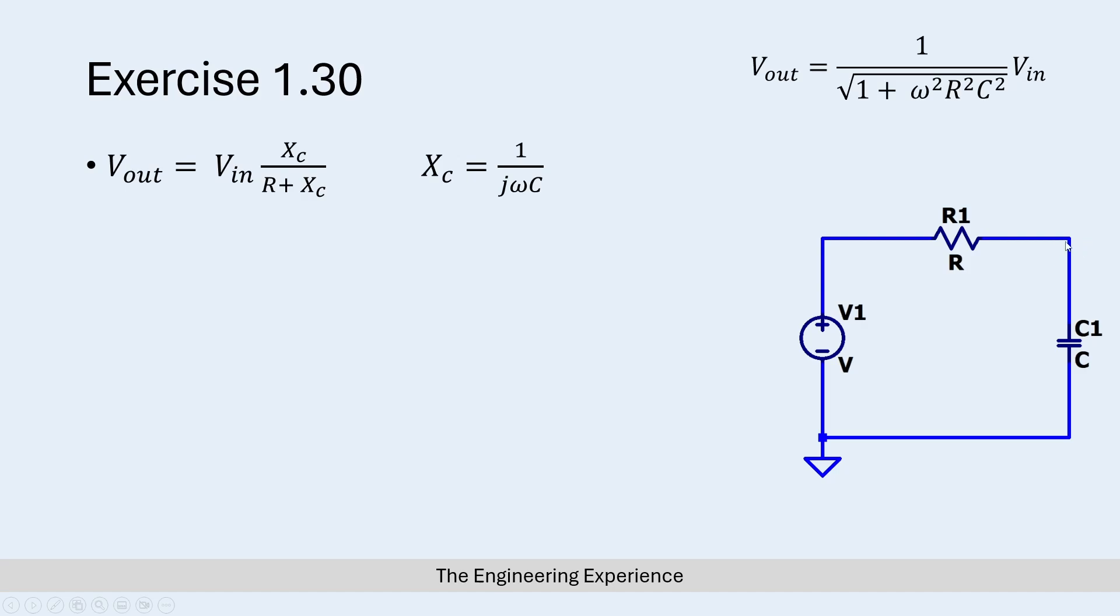V_out, which is this node over here, is equal to V_in, which is on V1, multiplied by the reactance of the capacitor divided by the resistance plus the reactance of the capacitor. In this case the reactance of the capacitor is set as 1 over jωC.